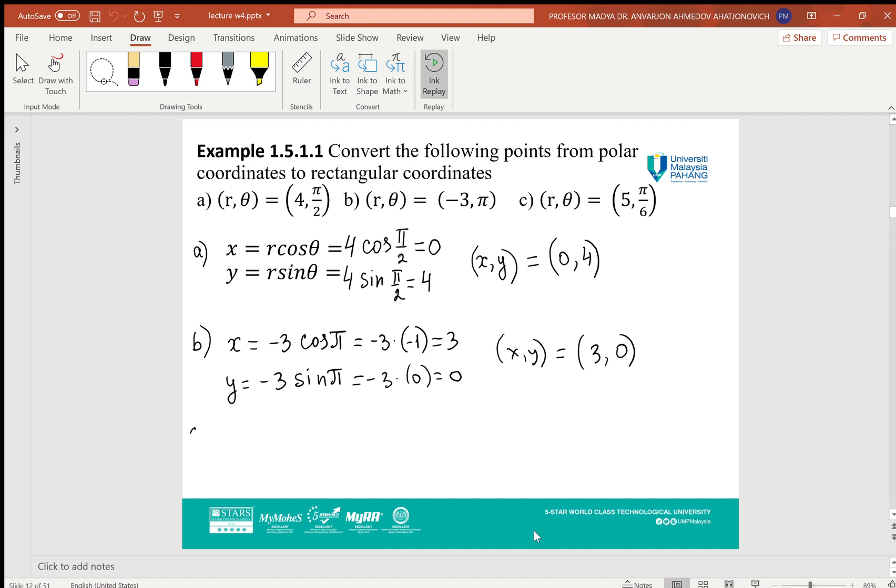Part c: r = 5, θ = π/6. We find x = 5 cos(π/6) and y = 5 sin(π/6). Since cos(π/6) = √3/2, the final answer in rectangular form is (5√3/2, 5/2).